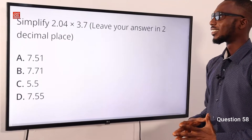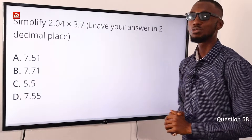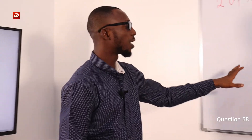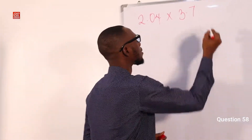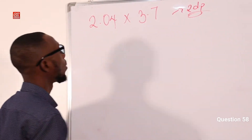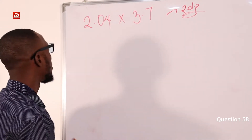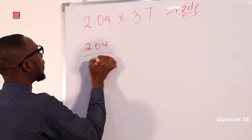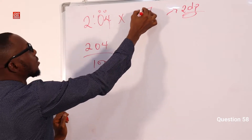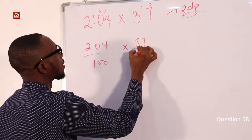Number 58. Simplify 2.04 times 3.7, leaving your answer in two decimal places. Two decimal places — that is very important. To eliminate the decimal points: 2.04 becomes 204 over 100, and 3.7 becomes 37 over 10.